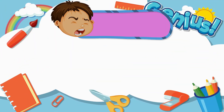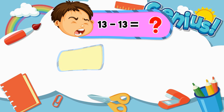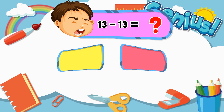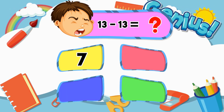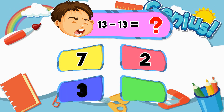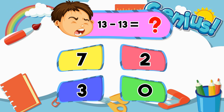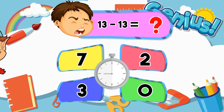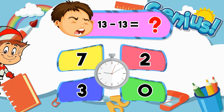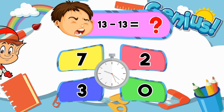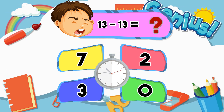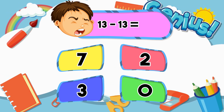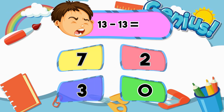What is 13 minus 13? 7, 2, 3, 0. Answer: 0.